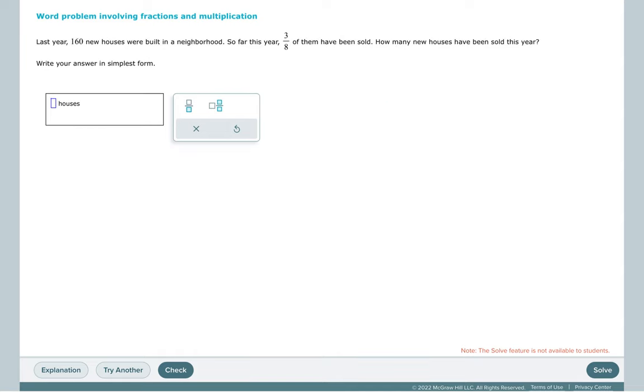Last year, 160 new houses were built in a neighborhood. So far this year, three-eighths of them have been sold. How many houses have been sold this year? So we're trying to figure out what is three-eighths of the 160 new houses.